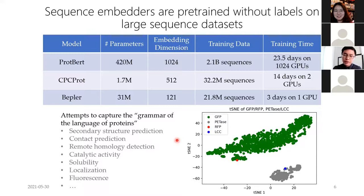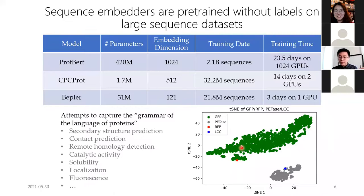To visualize the intuition, here I'm plotting a 2D T-SNE plot of the ProtBERT embeddings, which are in 1024 dimensions. GFP and RFP, both fluorescent proteins, form a very nice cluster together. PETase and LCC also tend to cluster together, even though these two have about 48% sequence identity. It confirms the intuition that homologous sequences do tend to cluster together.